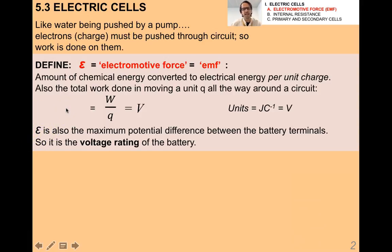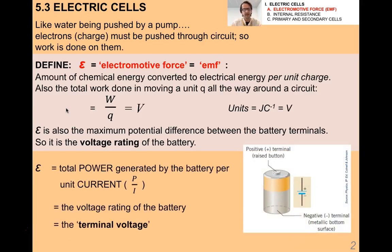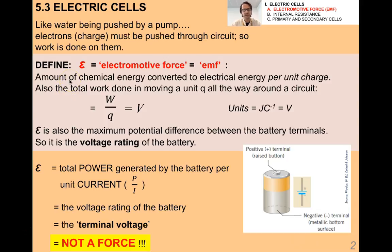EMF is symbolized by the Greek letter epsilon. It's also the maximum potential difference between the battery terminals, or the voltage rating of the battery. You can also think of it as the total power generated by the battery per unit current, because of P = IV. It's referred to as the terminal voltage or terminal potential difference. It's a real misnomer because EMF is not actually a force — it's a potential difference measured in volts; it's a voltage.